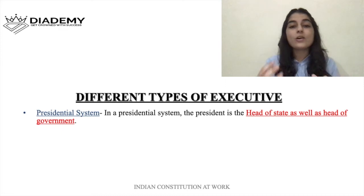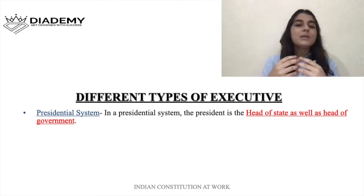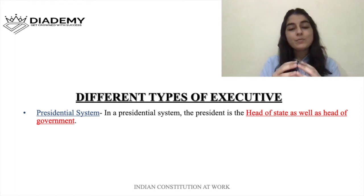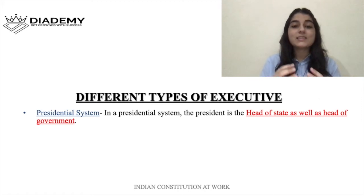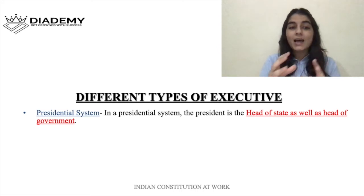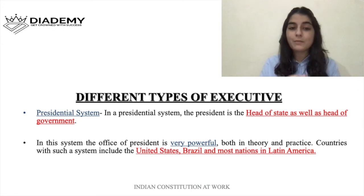The head of the state has no real power — only nominal power — whereas the head of the government exercises real power. In the presidential system, both the nominal functions (head of state) and the real power (head of government) are handled by the president. He is both the head of state and head of government, making the president very powerful under this system.